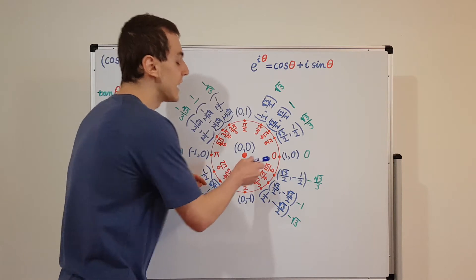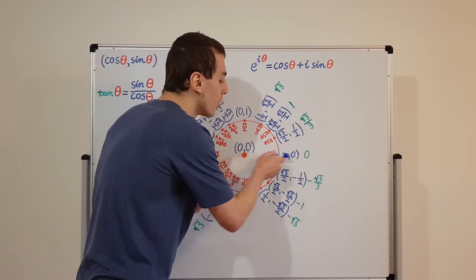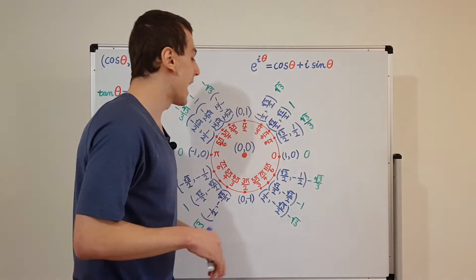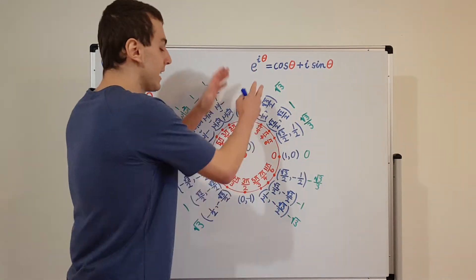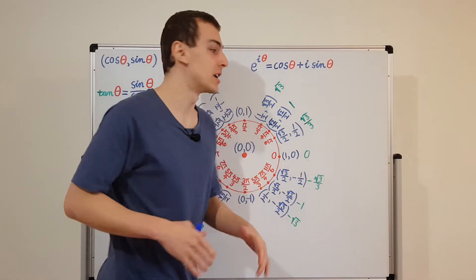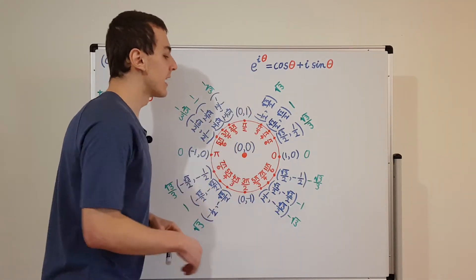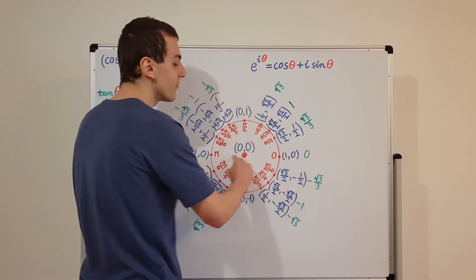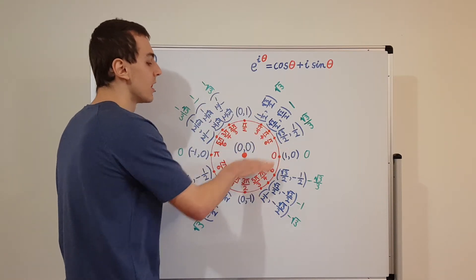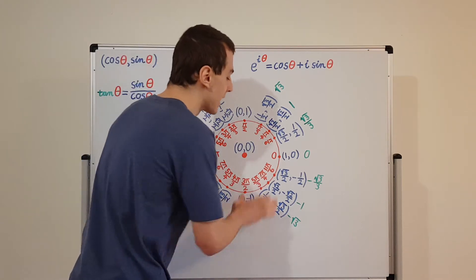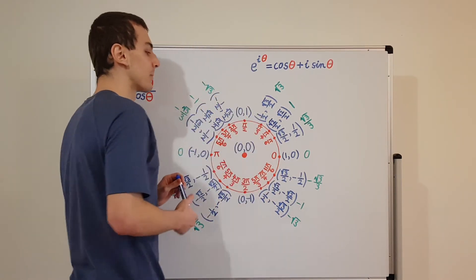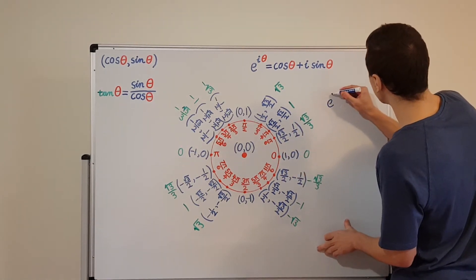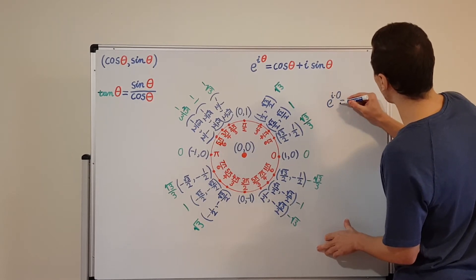As a reminder, theta is defined to be zero along the positive real axis. In this video I'm using real and horizontal interchangeably, and imaginary and vertical interchangeably, because in this visual representation those are just interchangeable terms. So let's start off with e to the i times zero. What happens if we put theta equals zero? This is by convention zero, and going around counterclockwise is a positive angle.